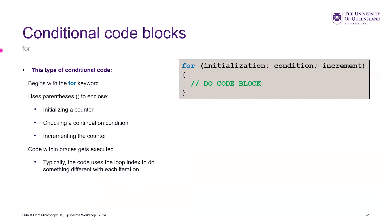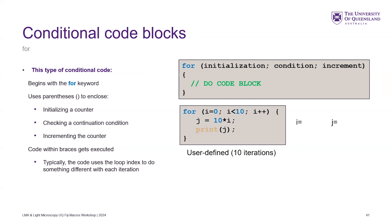For loops — you use these a lot. The structure is: initialize it, set a condition, then increment it. For each time it runs you put the code in. Typically you have a loop index variable. The initialization here is zero: for variable i equals zero, while i is less than 10, run the code, and each time increment i by one.